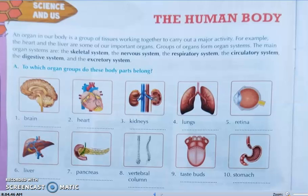Fourth, lungs — the respiratory system. Fifth, retina — the nervous system. Sixth, liver — the digestive system.